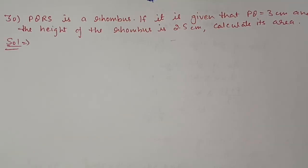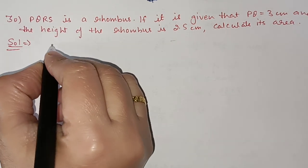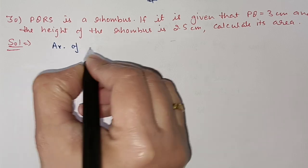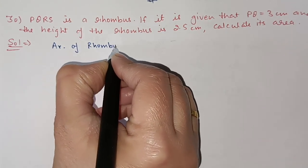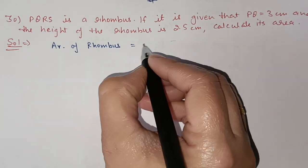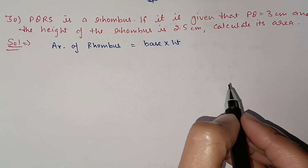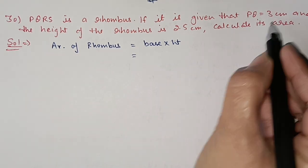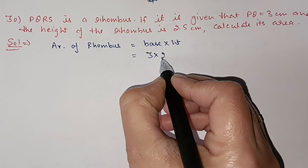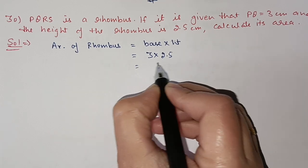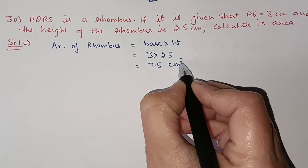Question number 30: PQRS is a rhombus. PQ is 3 centimeter and the height of the rhombus is 2.5 centimeter, calculate its area. One side is taken as base. If base and height are given, we use base into height formula. If diagonals are given, we use half D1 into D2. So area equals 3 into 2.5, which gives 7.5 centimeter square.